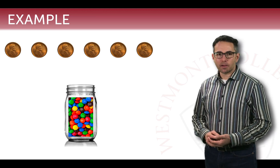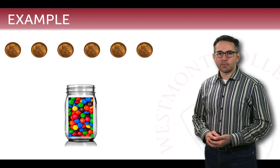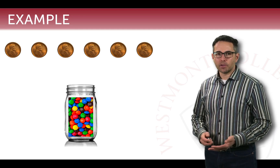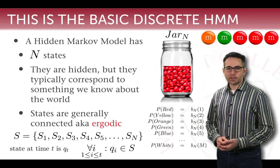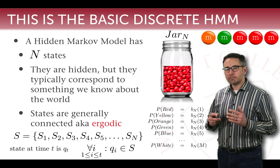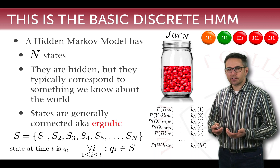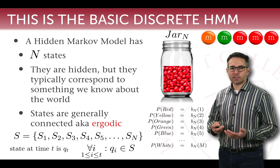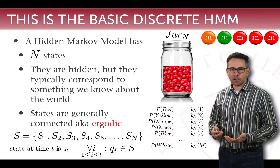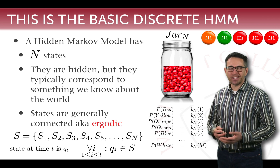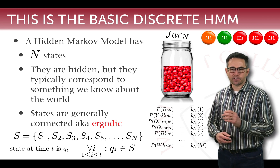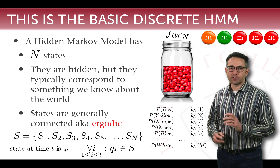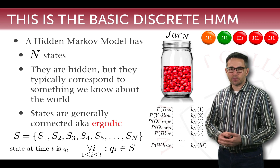In this lecture I want to talk about the formalism — how we're going to represent the hidden Markov model using notation. These models or games I just described are a basic discrete hidden Markov model. It's discrete because we're making observations that are symbolic, like colors of M&Ms or heads or tails, as opposed to continuous numbers.